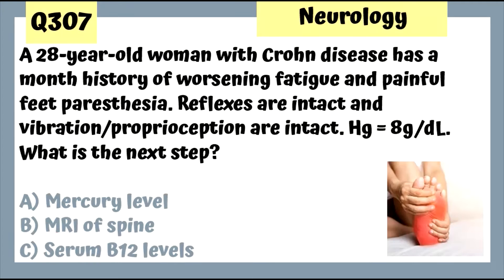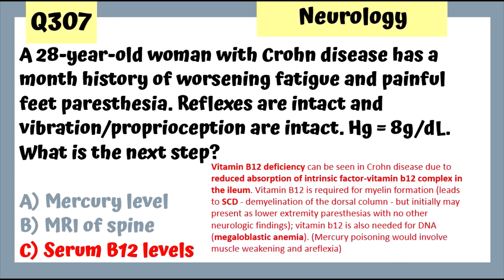Question 307: A 20-year-old woman with Crohn's disease has a month's history of worsening fatigue and painful paresthesias; reflexes and vibration sensation are intact; hemoglobin is low. The next step is to get serum vitamin B12 levels — this is likely causing the paresthesias, associated with Crohn's due to impaired absorption of intrinsic factor.